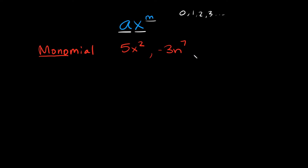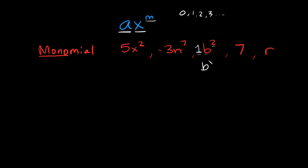A few more examples of monomials would be something like b squared, or just a number like seven, or just a variable like r. You might be wondering how these three fit our definition of a term. Let's start with b squared — it's obviously missing the coefficient, but whenever there's no coefficient, you can always assume there's a one there, because b squared is the same thing as 1b squared. The number one is normally just hidden. So we have our coefficient, variable, and exponent — but simplified, we can just write that as b squared.